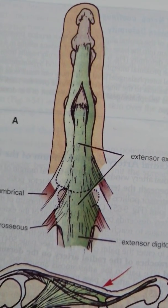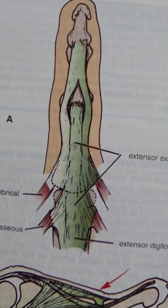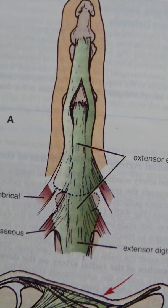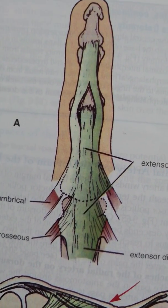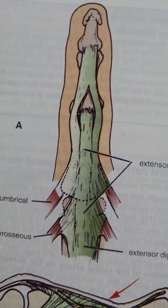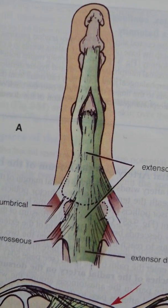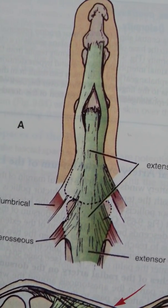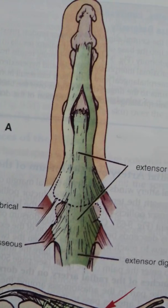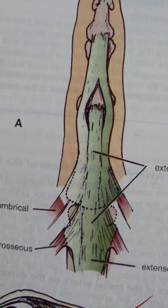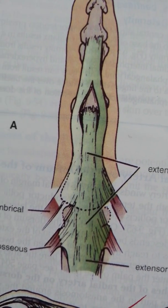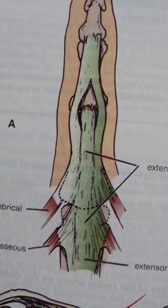So the key point is that it is a triangular aponeurosis. And aponeurosis is something like a flattened tendon. And triangular is basically representing the shape of this aponeurosis. And it basically covers the dorsum of the proximal phalanx of the digits. And the dorsum is the posterior part of it.